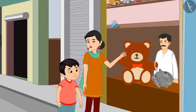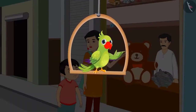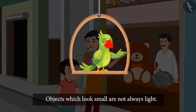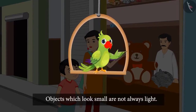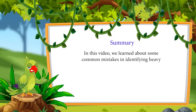So Chotu, did you see? Objects that look big in size need not always be heavy. Chotu agrees, and they decide to give the teddy bear to Pinky. So children, objects which look big are not always heavy, and objects which look small are not always light. That was all for today. In this video, we learned about some common mistakes in identifying heavy and light objects. I hope you have understood this topic properly. Bye children.